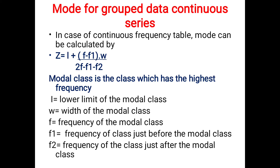Next we will move on to mode for group data in continuous series. In case of a continuous frequency table, you have a specific formula to calculate the mode. The formula is: Z equals L plus (F minus F1) multiplied by W, divided by (2F minus F1 minus F2).